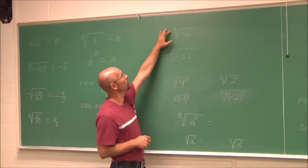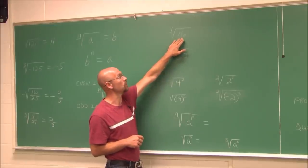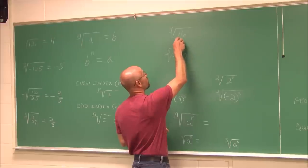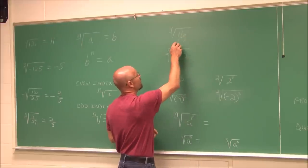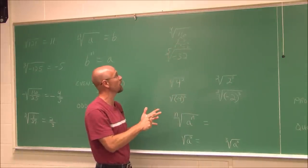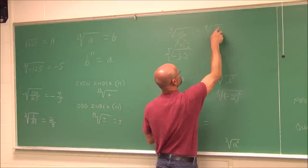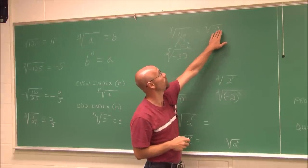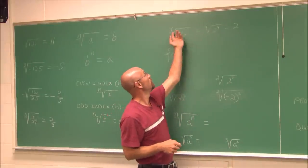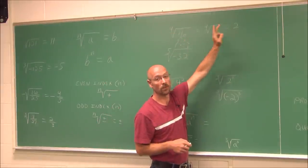Here we have the 4th root of 16. My index is 4 and my radicand is 16. We can factor: 16 is 2 times 8, which is 2 times 4, which is 2 times 2 — four factors of 2, so 16 is 2 to the 4th power. So what value raised to the 4th power gives 16? That is 2. Here we have an odd index of 5 with a negative value, so the solution is negative. 32 is 2 to the 5th — one more factor of 2 beyond 2 to the 4th. The 5th root of negative 32 is negative 2.